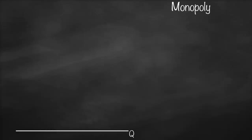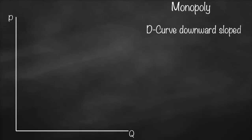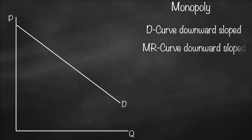Let's draw the graph for monopoly. This is our x-axis, which is the quantity, and this is our y-axis, which is the price. For monopoly, our demand curve is downward sloped. Our marginal revenue curve is also downward sloped and it is below the demand curve — it is below the price.